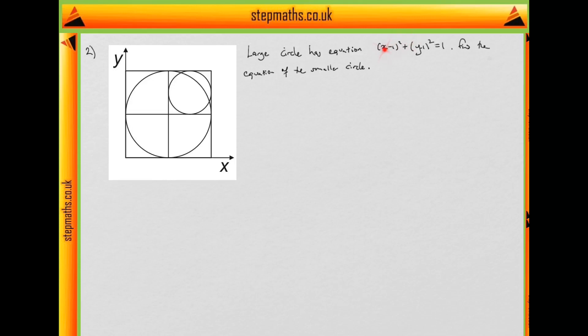We know from looking at this that the large circle must have its center at (1, 1), comparing it to the normal form of a circle. Let's label that. We know the center is at (1, 1), and the length of the radius is 1, because 1 squared equals 1.